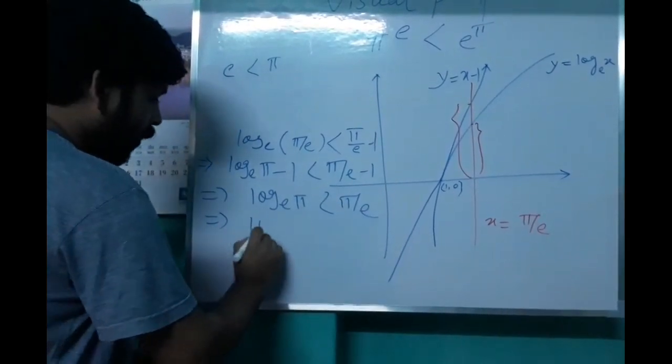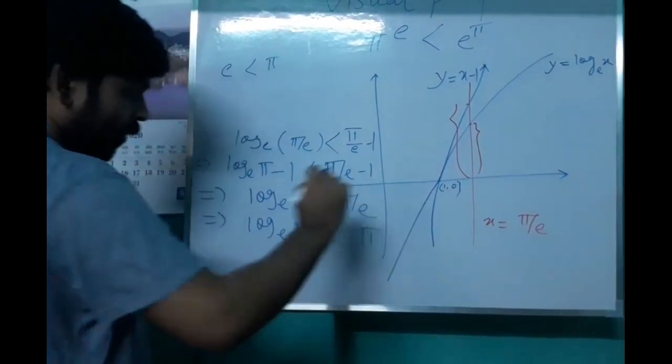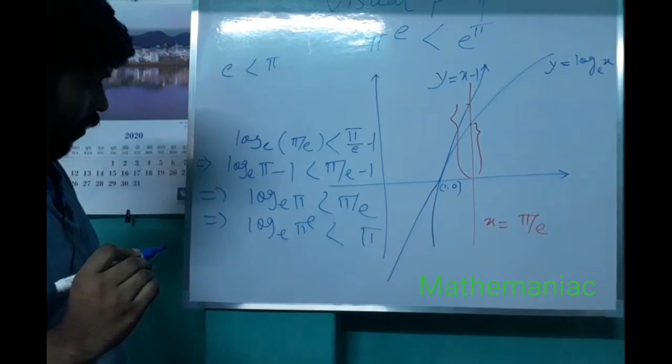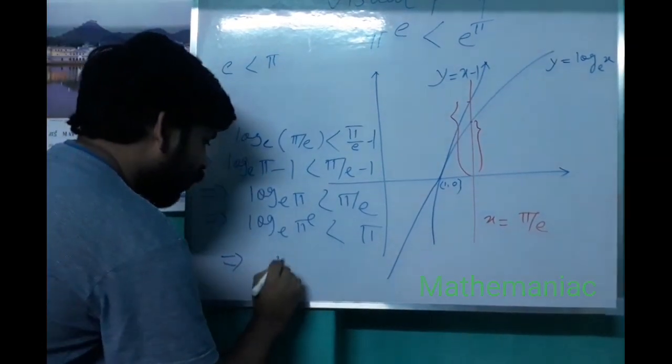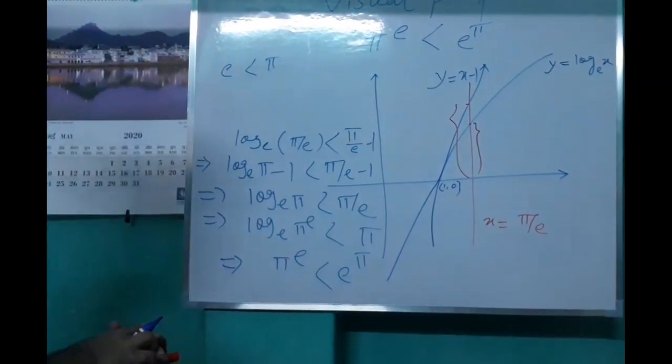So just from this, pi to the power e is less than e to the power pi. This is actually pi to the power e less than e to the power pi.